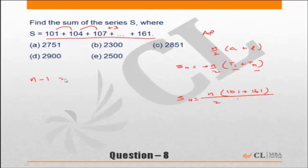The number of terms, you can remember this formula: n minus 1 should be equal to 161 minus 101 upon d. d in this case is 3, or in general you can say n minus 1 should be equal to tn minus t1 upon d.